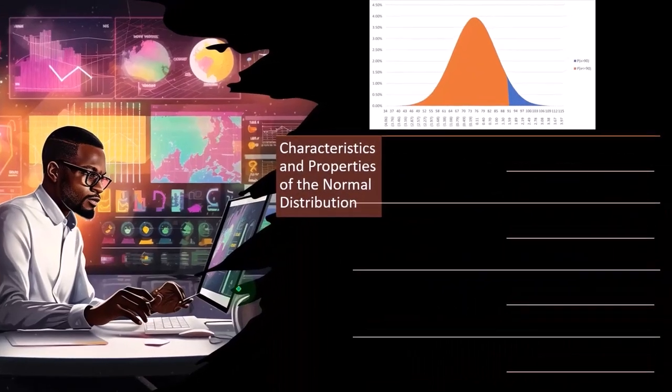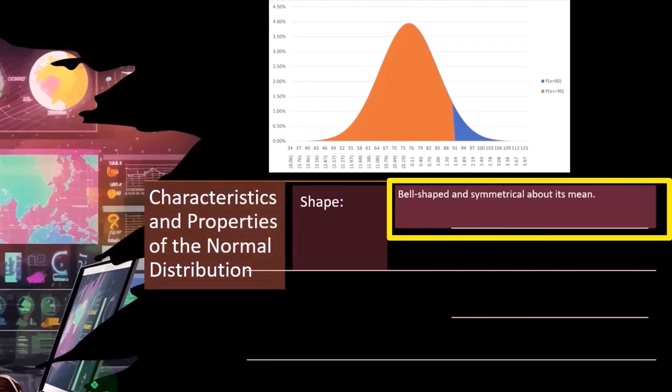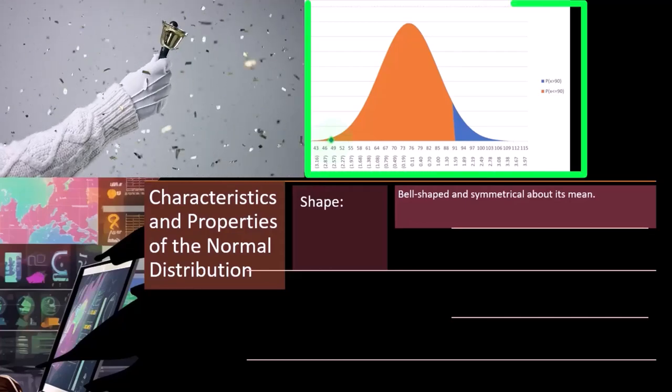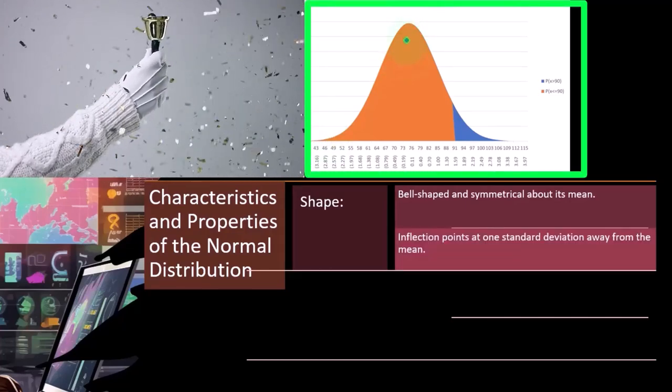Characteristics and properties of the normal distribution. The shape. So bell shape and symmetrical about its mean. So what's the shape of the bell? It's in a bell. It looks like a bell. It's an upside-down bell.